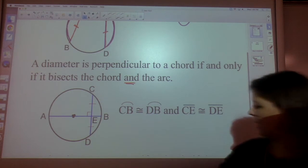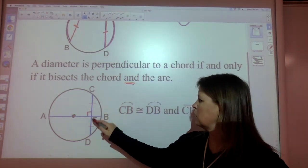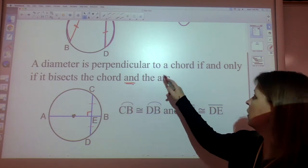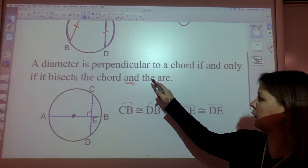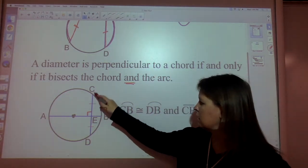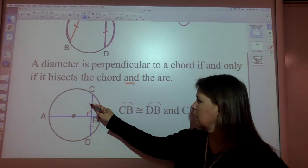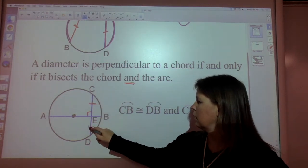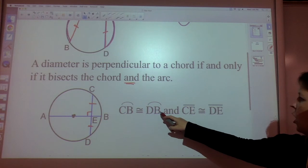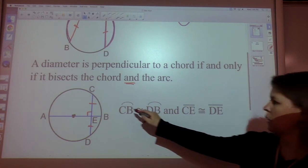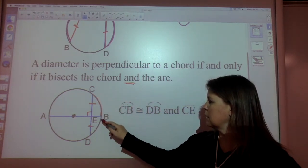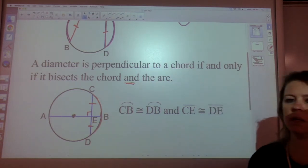That diameter has to both be perpendicular to the chord. Here, if it's perpendicular, not only does this whole chord CD get bisected, but also the arc gets bisected, which means CB is exactly the same size as BD.